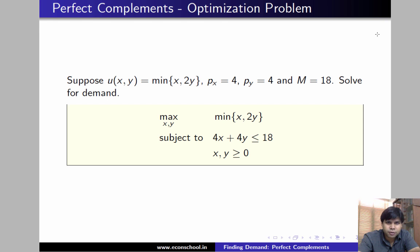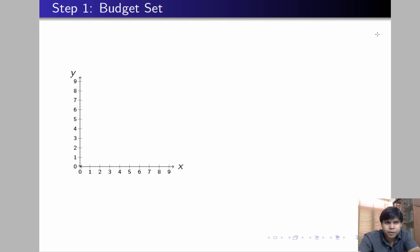The first step is going to be plotting the budget line. The budget line is 4x plus 4y equal to 18. When we plot it, we see that the horizontal and the vertical intercept of this line are going to be 18 by 4 each, which is 4.5. When you connect 4.5, we get this budget line. Notice that the slope of the budget line is 1 in absolute terms.